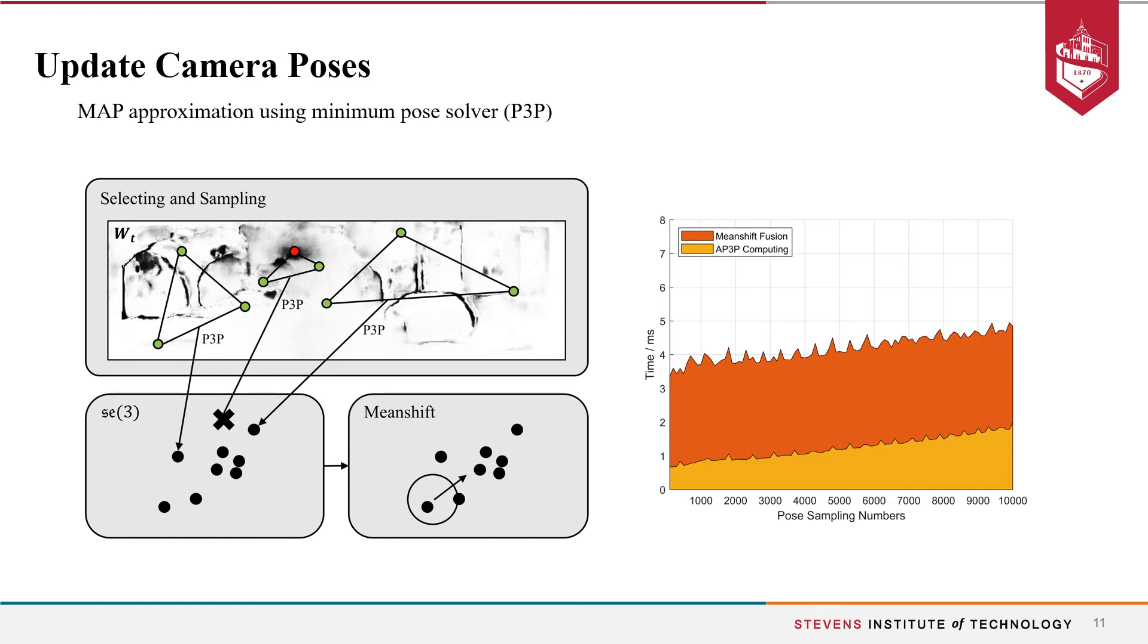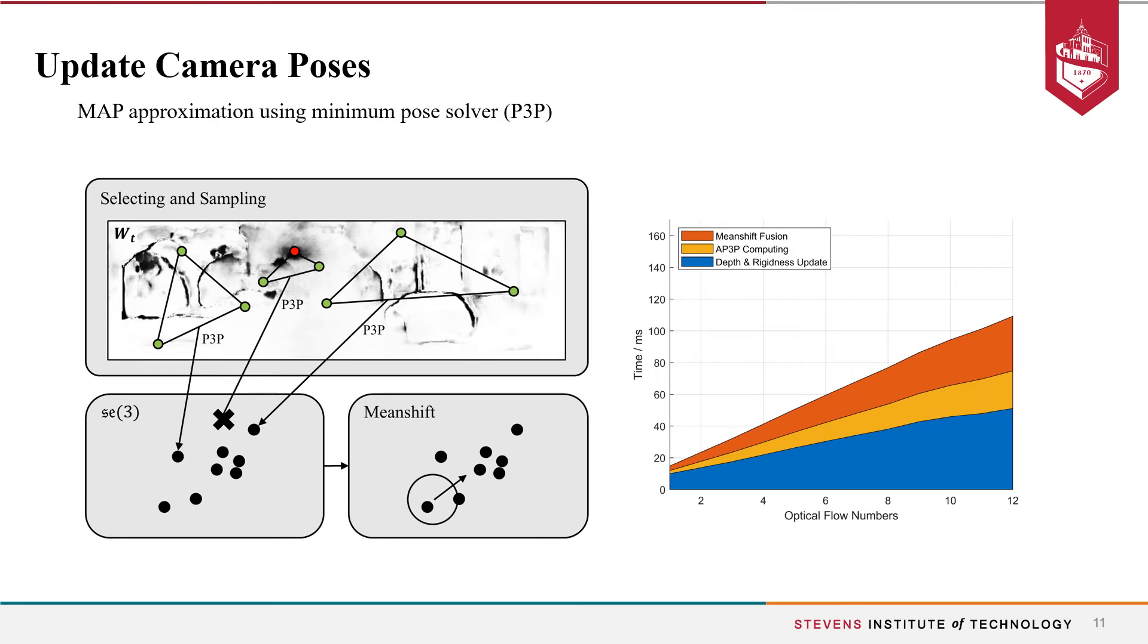Plus the time for updating depths and rigidness maps, the total time for each updating cycle is as shown. In our experiments, we take 6 frames for each batch, and our method usually converges in 2 to 5 iterations.